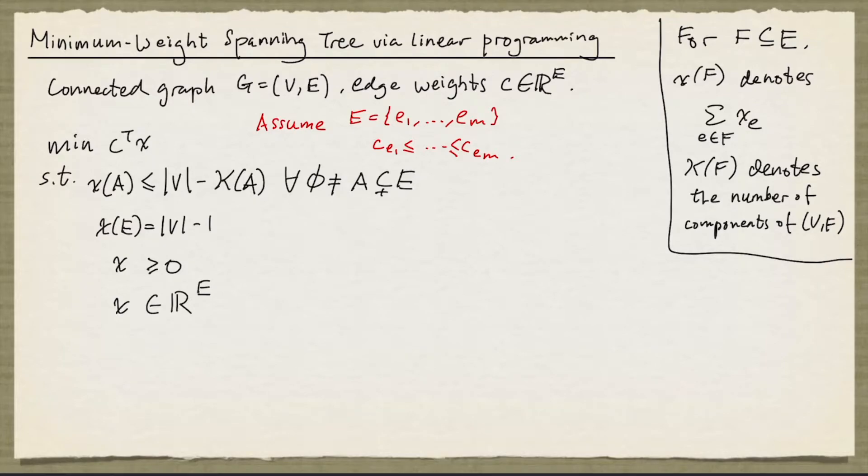We continue our discussion on the minimum weight spanning tree problem in connection with linear programming. As before, we have a connected graph G with edge weights given by C. We assume that the edges are labeled e1 up to em, and the edge costs of e1 up to em are in non-decreasing order.